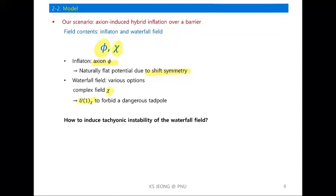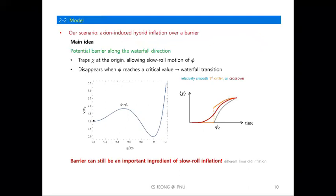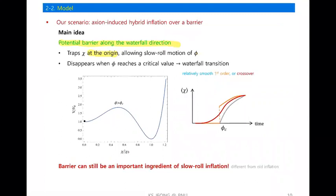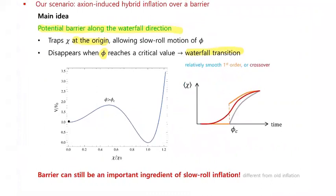We impose a U(1) symmetry in order to forbid dangerous terms in the scalar potential. The question is how to induce tachyonic instability of the waterfall field, which is necessary to terminate inflation. The idea is to use a potential barrier along the waterfall direction. This barrier traps the waterfall field at the origin, allowing slow motion of the inflaton. The barrier disappears when the inflaton reaches some critical value, and then the waterfall transition occurs.